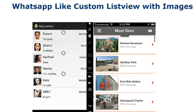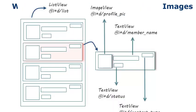Each item of the ListView contains one ImageView and three TextViews, just like the WhatsApp ListView as you are seeing on your screen right now. The ListView has the ID 'list', and also the ImageView which is going to stand for the profile picture, the TextView for the member name, the status, and also the contact type — those are the three TextViews and one ImageView holding the profile picture.